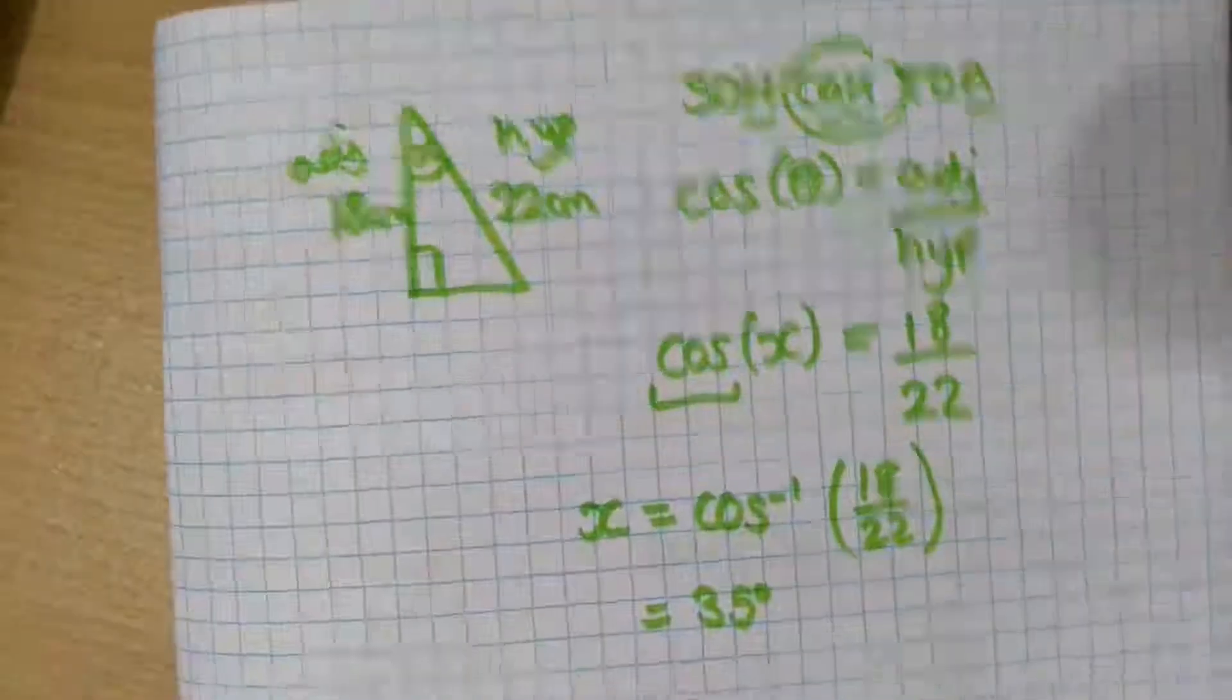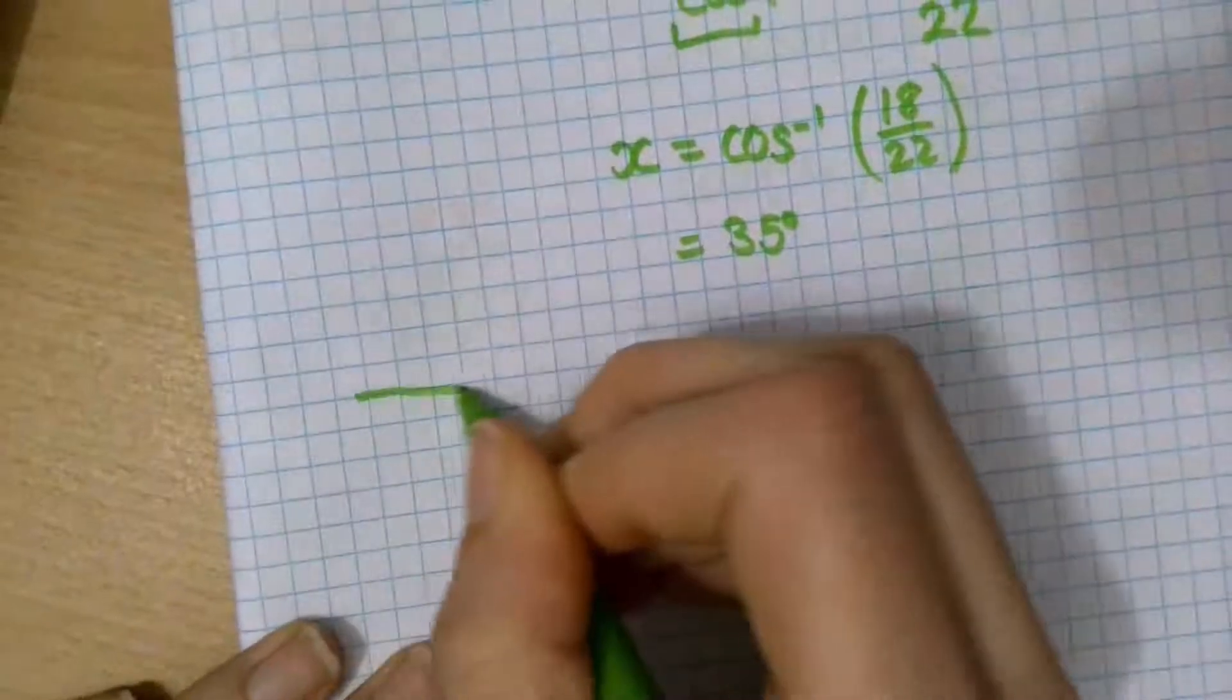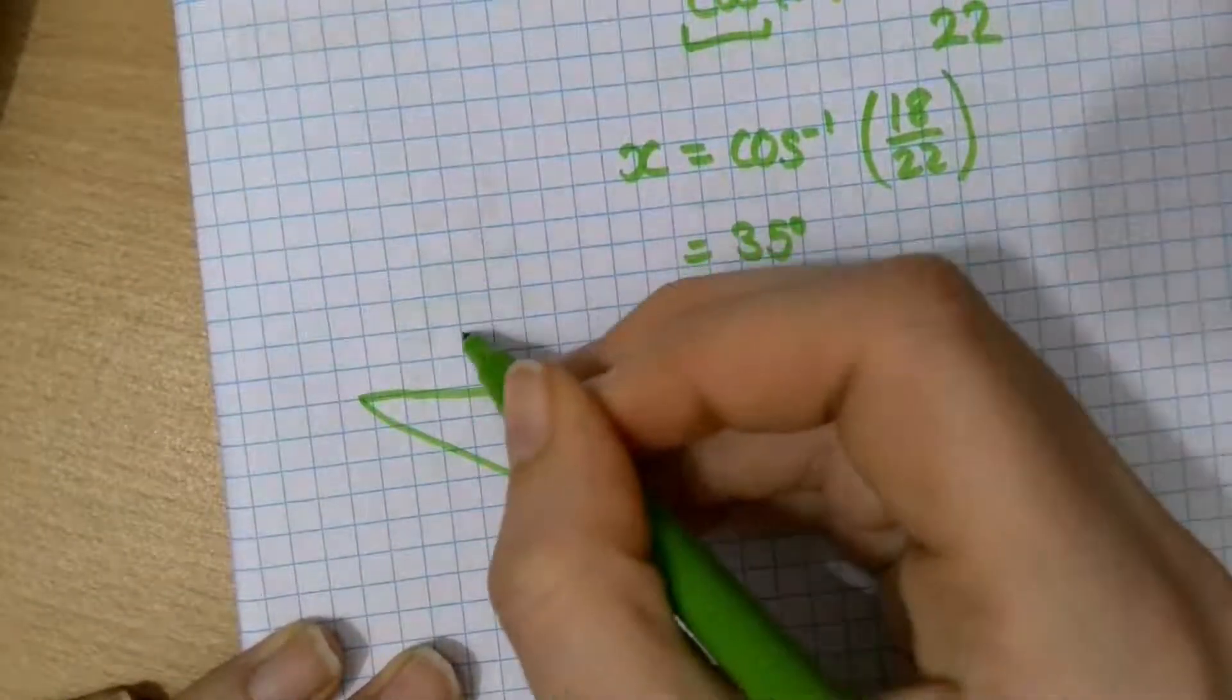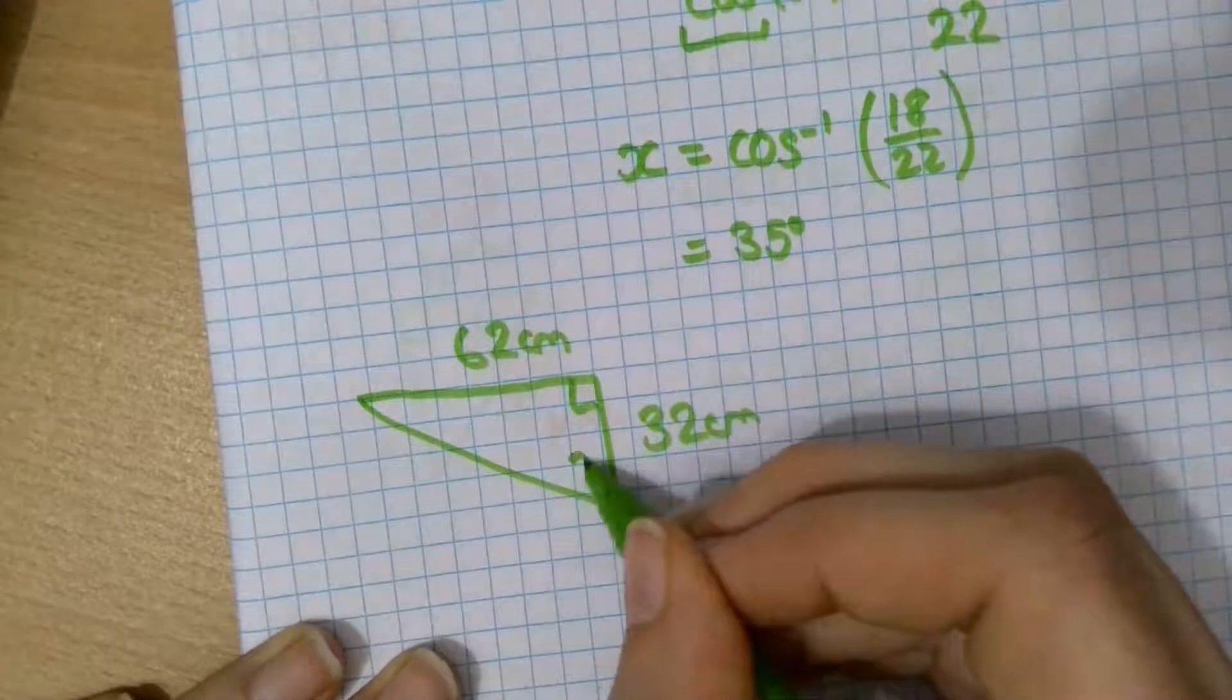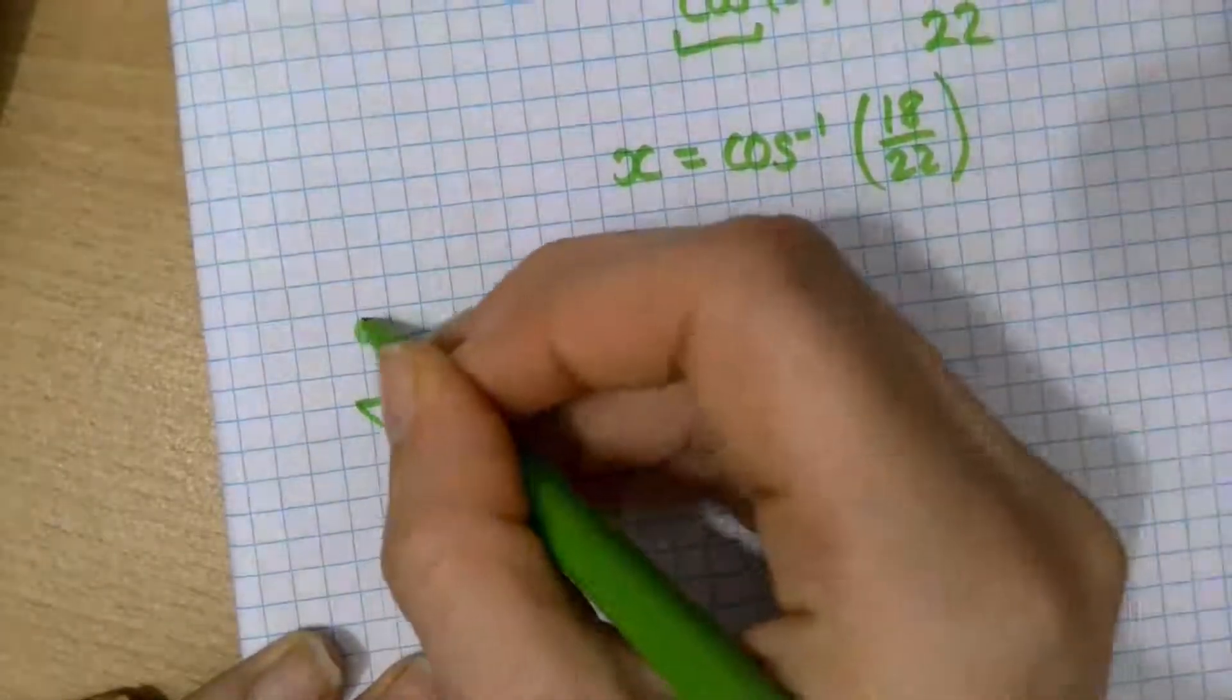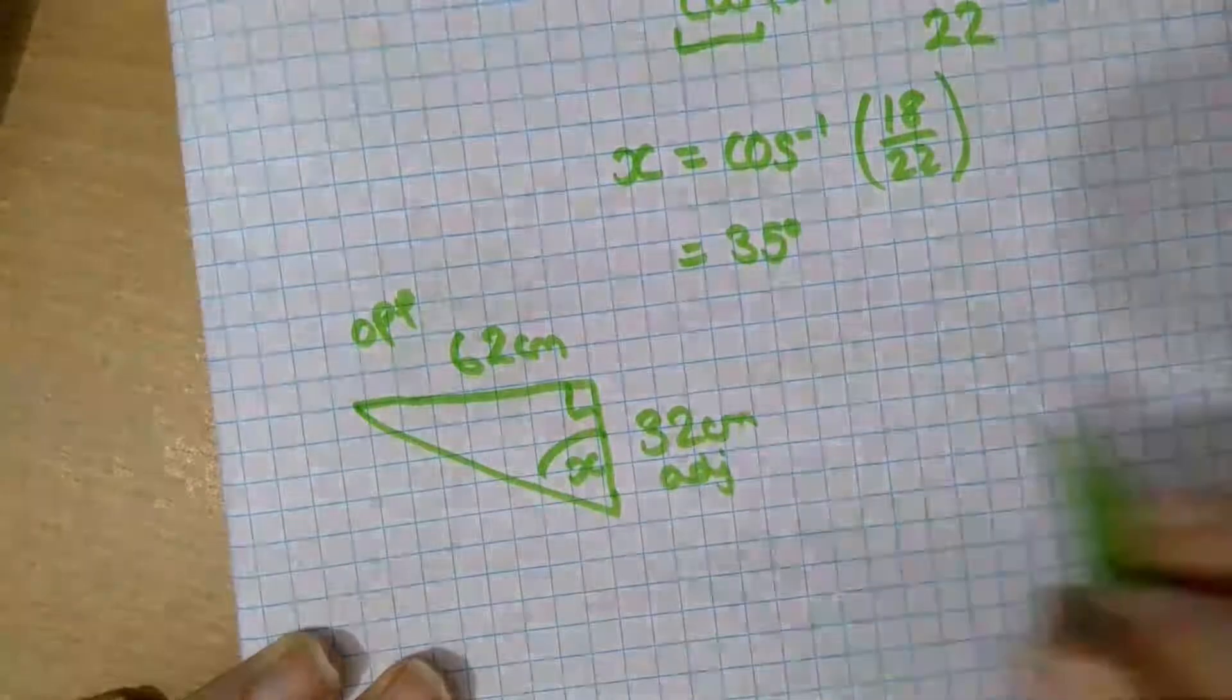I'm going to do one more example using tan, just because otherwise we haven't seen one with tan on it yet. For a little while. So, here I have a triangle. This side here is 62cm. This side here is 32cm. That's a right angle. And this is my angle x that I want to find. So, I label my sides. This is my opposite side. This is my adjacent side. This is the hypotenuse. But I really don't care because it's got no information on it.